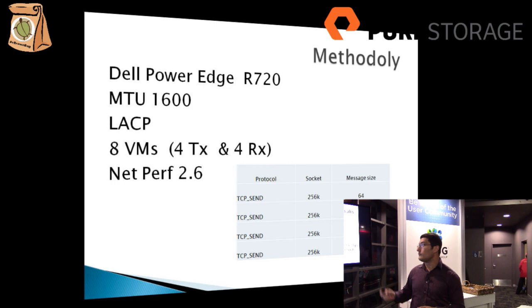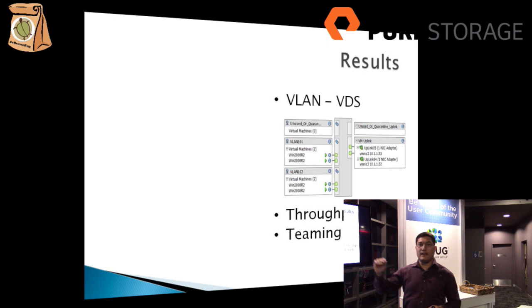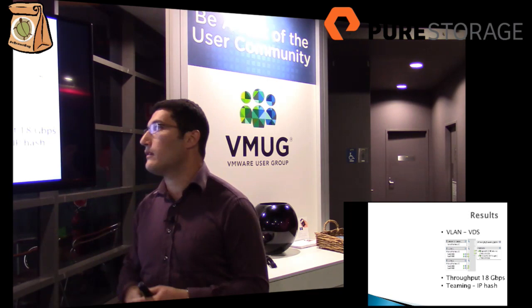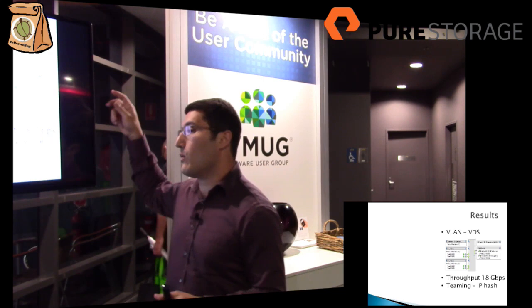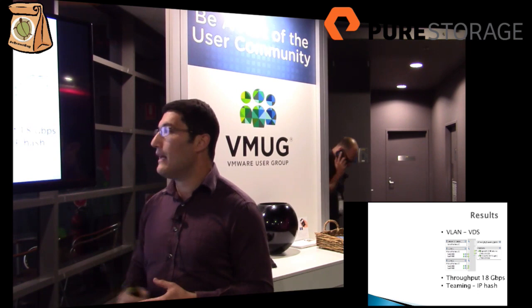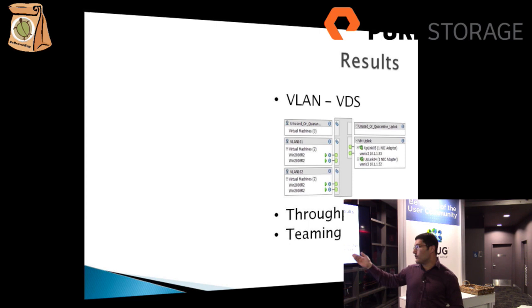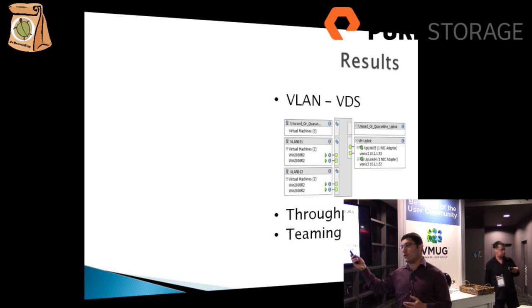In the traditional VLAN physical world, we have the standard DVS running with two port groups on different VLANs. To communicate from VMs in VLAN 101 to VMs in VLAN 102, the VM sends traffic to the NIC, then to the switch, and back to the VM in VLAN 102. The throughput we got was around 18 Gbps. Since we were using link aggregation, the teaming policy for that scenario was IP hash.